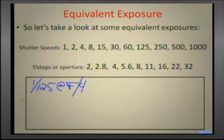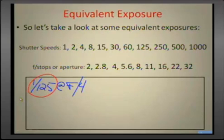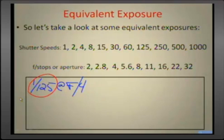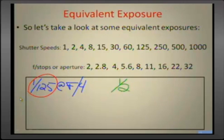We know that 1/125th of a second is not going to show that cloudiness or cotton-like appearance of the water because the shutter is too fast. So I need to slow the shutter down, because the longer the shutter speed, the more the motion of the water will record like that cotton appearance. Let's say I want to use a half a second, because I know at a half second I'll get that effect.